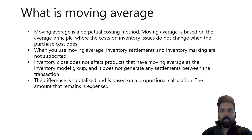Moving average is a perpetual costing method. It is based on the average principle where the cost on inventory issues does not change when the purchase cost changes. Which means if you have issued the inventory at a specific cost and later on if, due to some reason, the cost is getting changed or updated for that quantity, my cost of issue will not get updated.